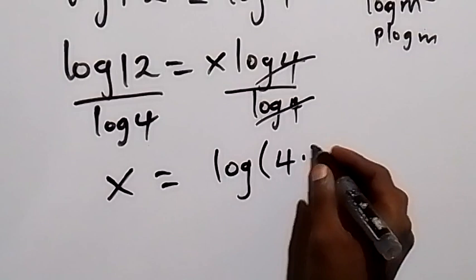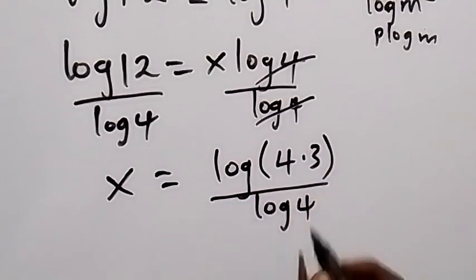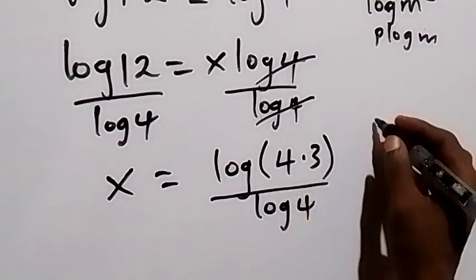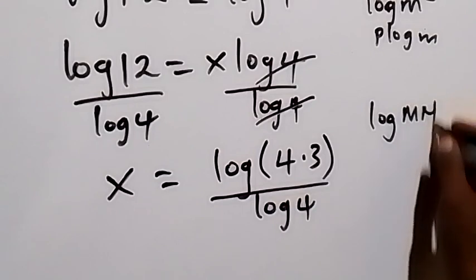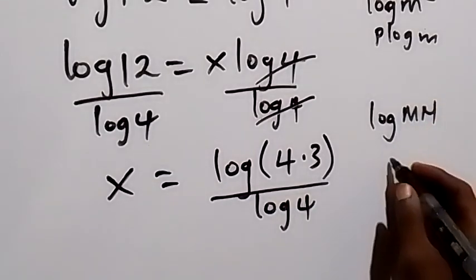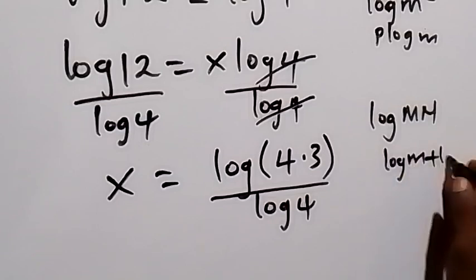Then over log 4. So for this product in log, we have log m times n. We can separate it and we are going to have log m plus log n.